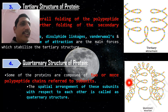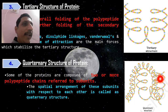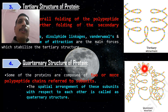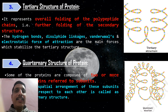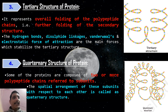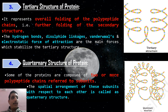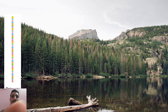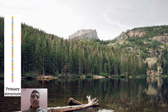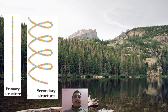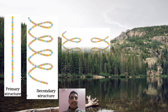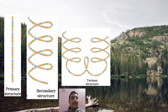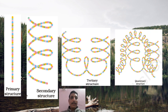Looking at the structure: this shows secondary structure and tertiary structure within it. In quaternary structure, we have primary, secondary, and tertiary structures — each of those is called a subunit, and the arrangement of these subunits is the quaternary structure. These are the four types of structures of proteins.